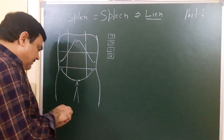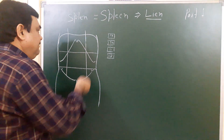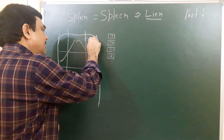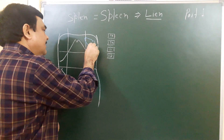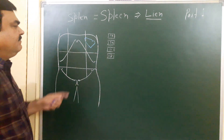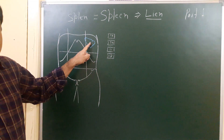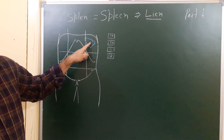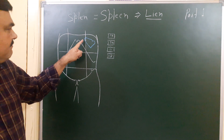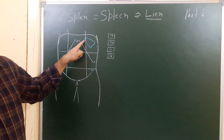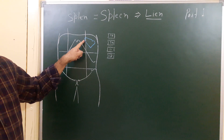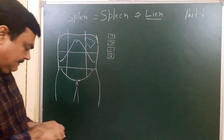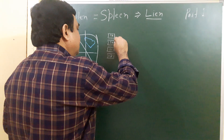The position of the spleen: the spleen lies here. Most part of the spleen lies in the left hypochondrium and some part lies in the epigastrium.